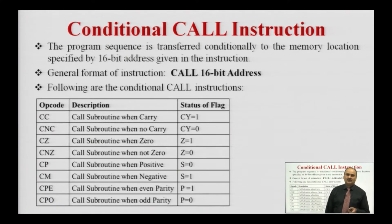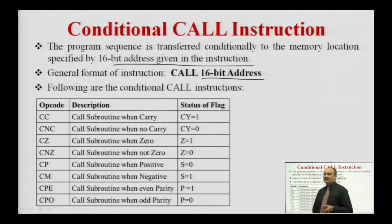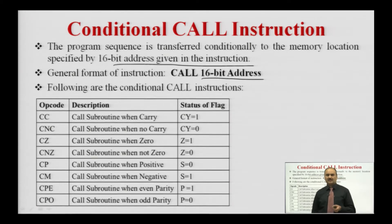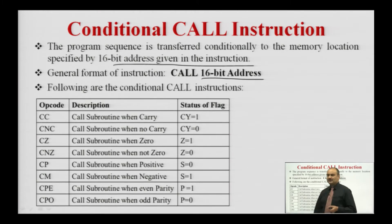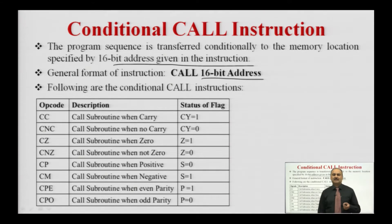Next is the conditional CALL instruction. The program sequence is transferred conditionally to the memory location specified by the 16-bit address given in the instruction. The general format is: CALL followed by a 16-bit address. In the conditional CALL instruction, the processor checks whether the condition is satisfied. If the condition is true, the processor transfers control from the main program, executes the subroutine, and returns back into the main program.